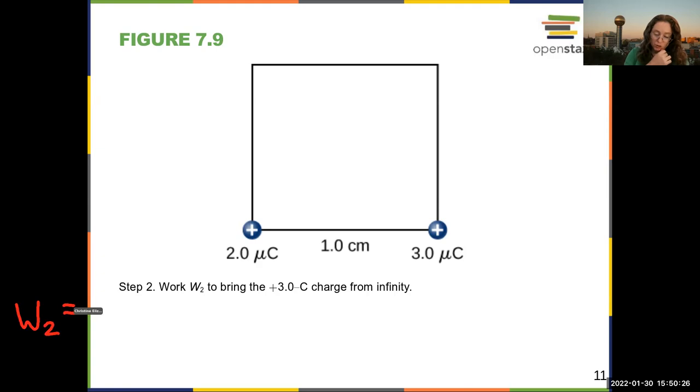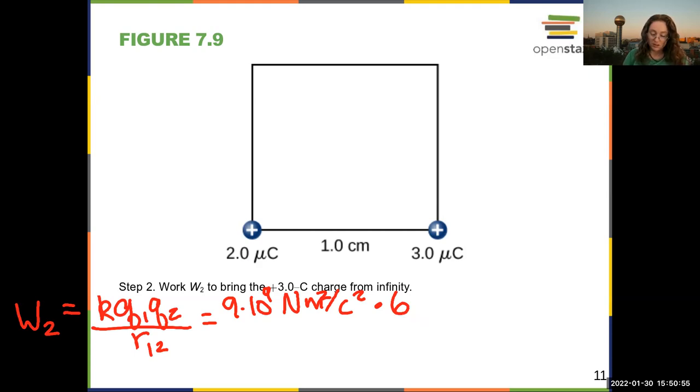The work in step two is going to be KQ₁Q₂ over R₁₂: 9 times 10 to the 9 newton meters squared per coulomb squared times 6. I'm doing some multiplication before writing stuff down. I'm taking 2 times 3 is 6 times 10 to the negative 12 because micro means 10 to the negative 6. Coulomb squared over 10 to the negative 2 meters.